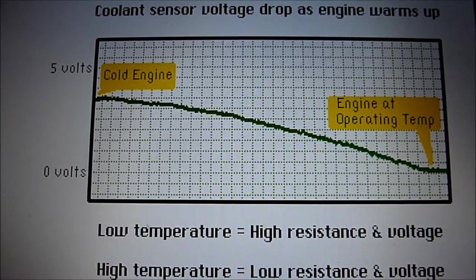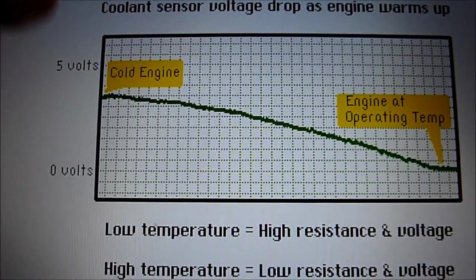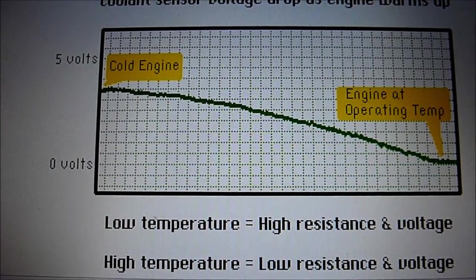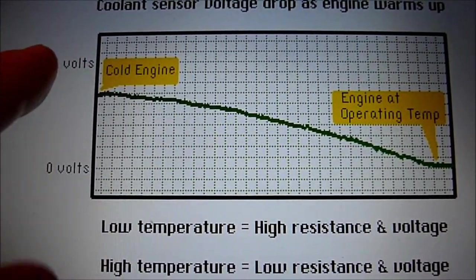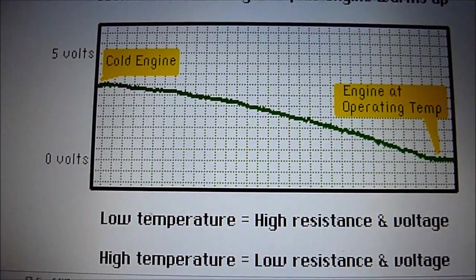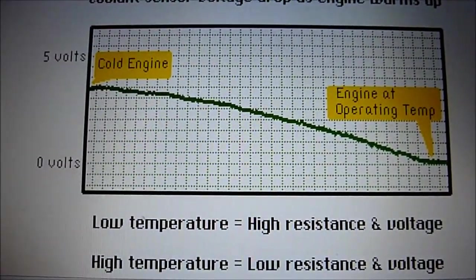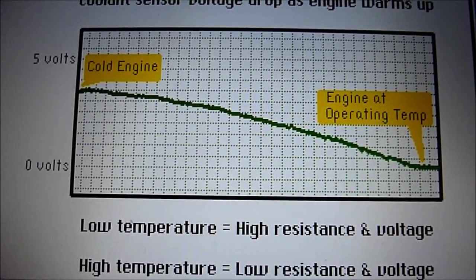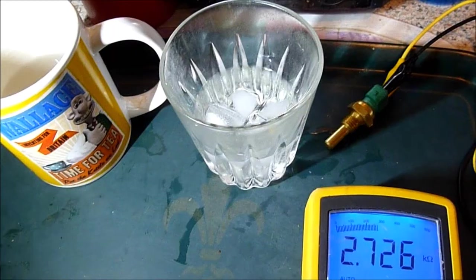As you can see from this diagram here, when the engine's cold, you can see you've got a higher resistance and voltage. As the engine warms up, you have the opposite effect. High temperature, we have a lower resistance and a lower voltage. So that's what we see from the sensor. It's easy to show on a diagram how it operates.